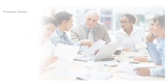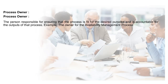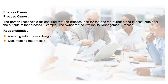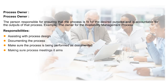The process owner is responsible for ensuring that the process is fit for the desired purpose and is accountable for the output of that process — for example, the owner for the availability management process. Responsibilities include assisting with process design and documenting the process. The process owner is also responsible for ensuring the process is being performed as documented and that the process is meeting its aim.